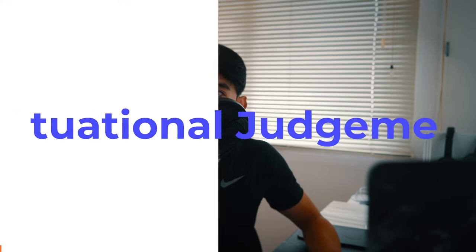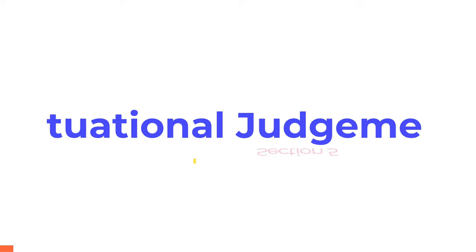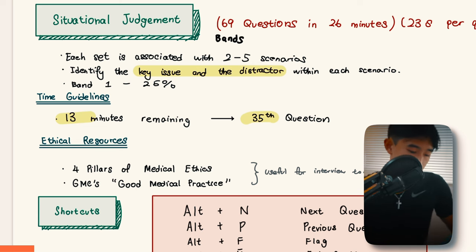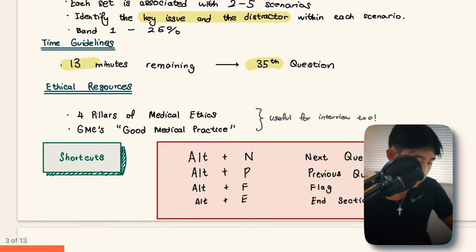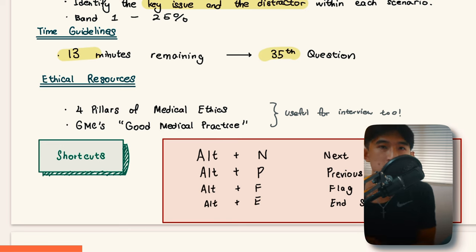So now let's look at situational judgment, which is the last section, and it's the least time pressured section. My recommendation is don't rush through it at all. You got so much time to read through each scenario carefully. Each scenario you're given is associated with two to five additional scenarios that are linked to it. And you have to identify the key issue and the distractor within each scenario. Some good resources that I recommend definitely reading online is four pillars of medical ethics: autonomy, justice, beneficence, and non-maleficence.